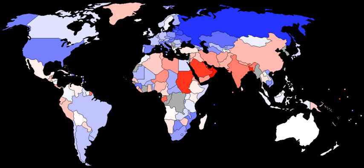Fisher's principle is an explanation of why the sex ratio of most species is approximately 1 to 1. Outlined by Ronald Fisher in his 1930 book, it is an argument in terms of parental expenditure. Essentially he argues that the 1 to 1 ratio is the evolutionarily stable strategy.